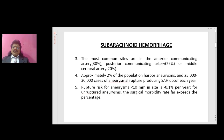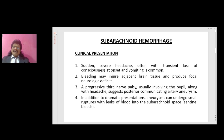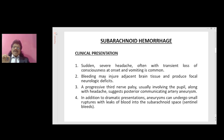The rupture risk for aneurysms less than 10 mm in size is only 0.1% per year. For unruptured aneurysms, surgical morbidity rate far exceeds this percentage. Clinical presentation: sudden severe headache, often with transient loss of consciousness at onset and vomiting, is common. Bleeding may injure adjacent brain tissue and produce focal neurologic deficits — for example, a progressive third nerve palsy usually involving the pupil, along with headache, suggests a posterior communicating artery aneurysm. Aneurysms can also undergo small ruptures with leaks of blood into the subarachnoid space, known as sentinel bleeds.